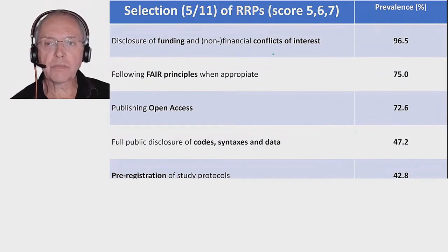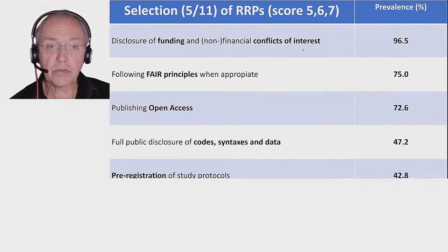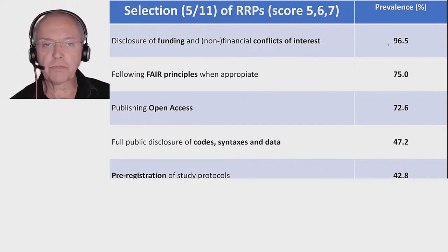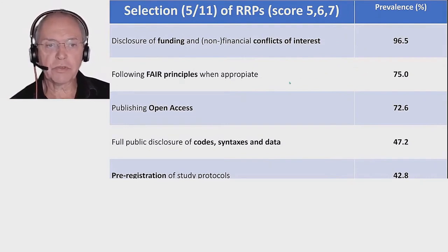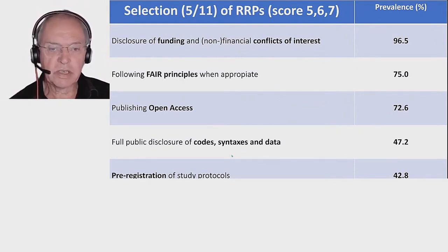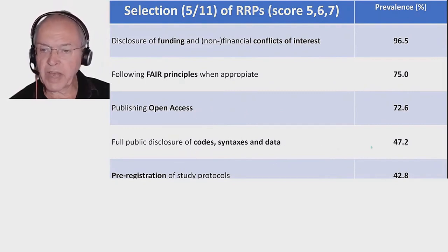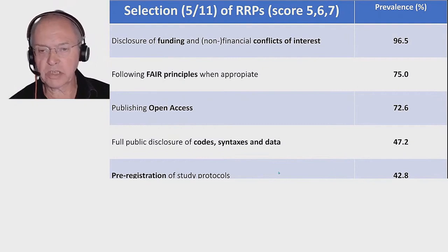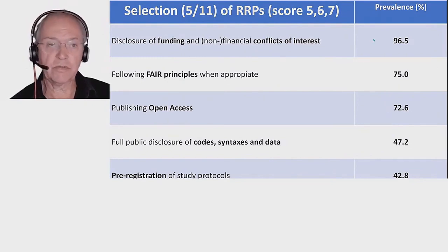We also looked at the bright side of things — the responsible research practices. There we saw that disclosure of funding and non-financial conflict of interest, a point that Daniele emphasized as well, almost all respondents said they do that frequently. Three quarters said they followed FAIR principles frequently, a little bit less so for open access publication. Disclosure of code, syntaxes, and data was about half of them, and a bit more than 40% admitted to registration or pre-registration. So there is some room for improvement, and some areas that are almost perfect — if our survey led to valid answers.